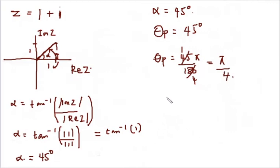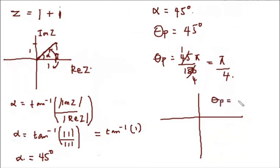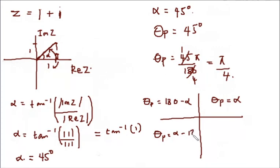To summarize theta_p in terms of quadrants: in the first quadrant, theta_p equals alpha. In the second quadrant, theta_p equals 180 minus alpha. In the third quadrant, theta_p equals alpha minus 180 degrees. In the fourth quadrant, theta_p equals minus alpha. In case you forget how to do the other parts, you can always remember these relationships between theta_p and alpha.